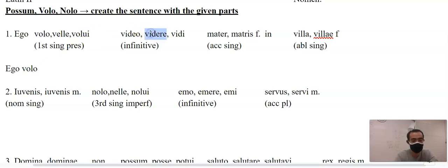Infinitives are always the second part of a verb, so that's volo videre. Matris, that I-S there tells me it's third declension, that's going to change from an I-S to an E-M, to matrem. And then villa, it's going to be ablative, that one is just villa, in villa.